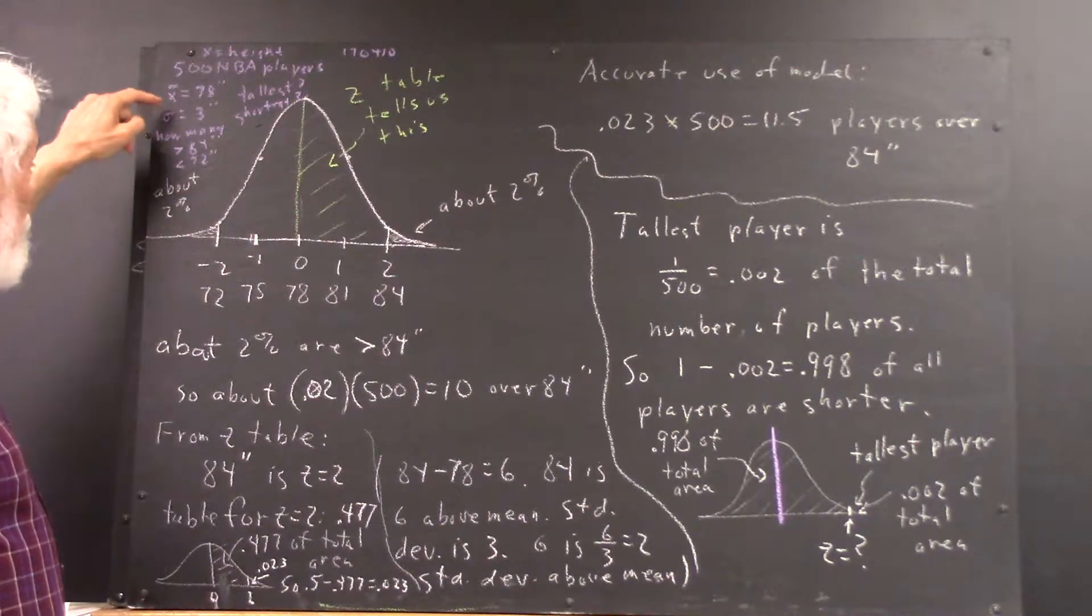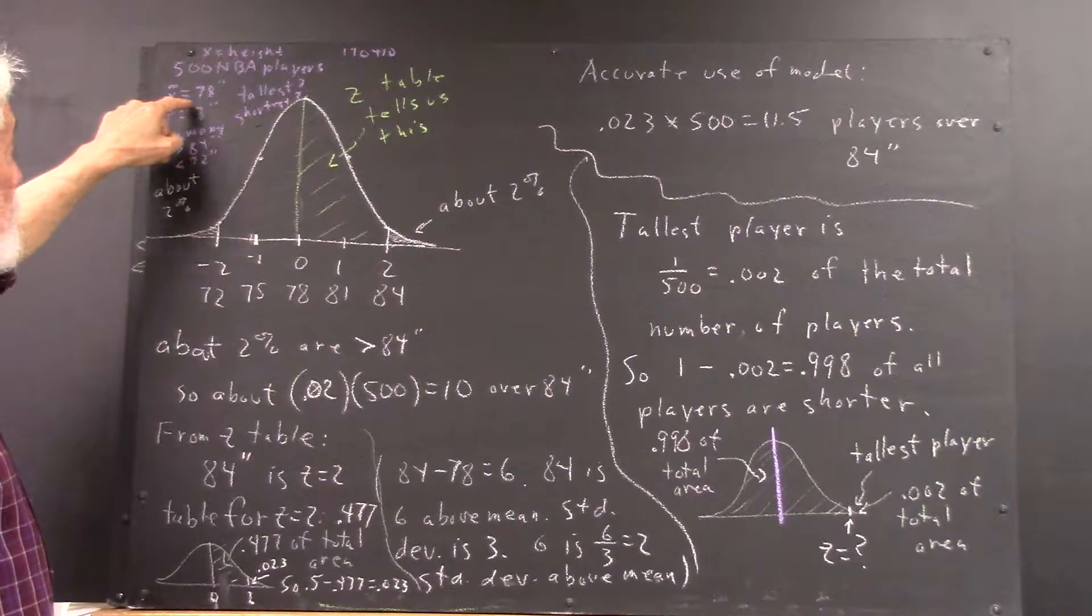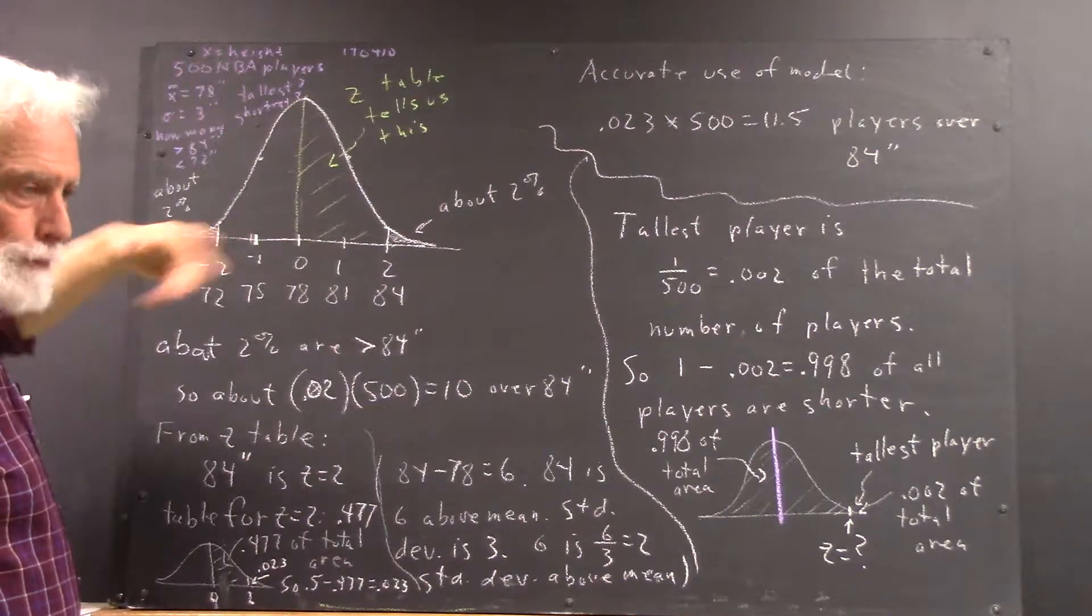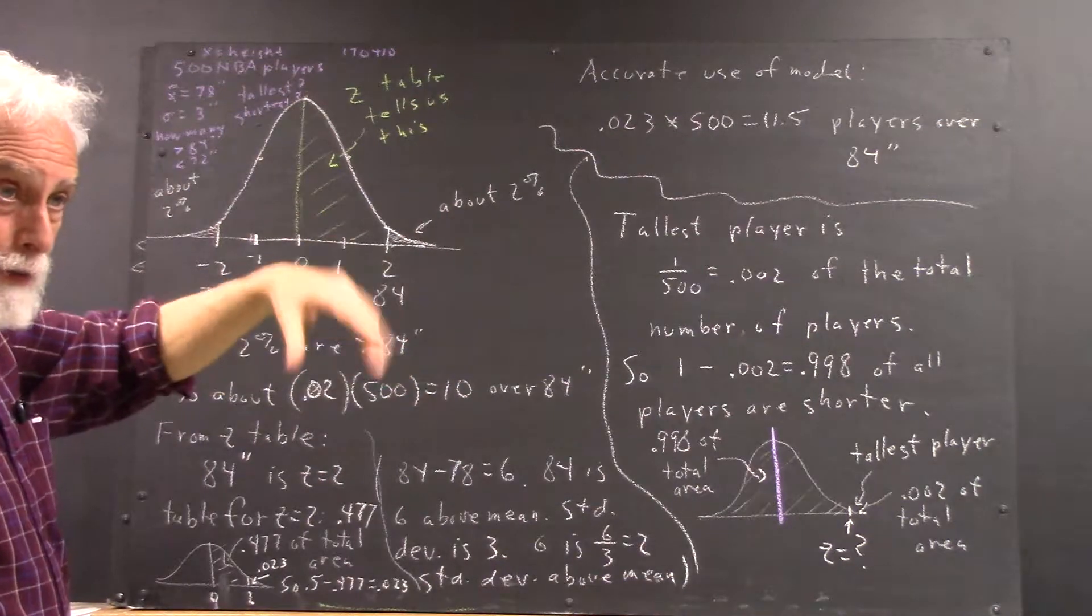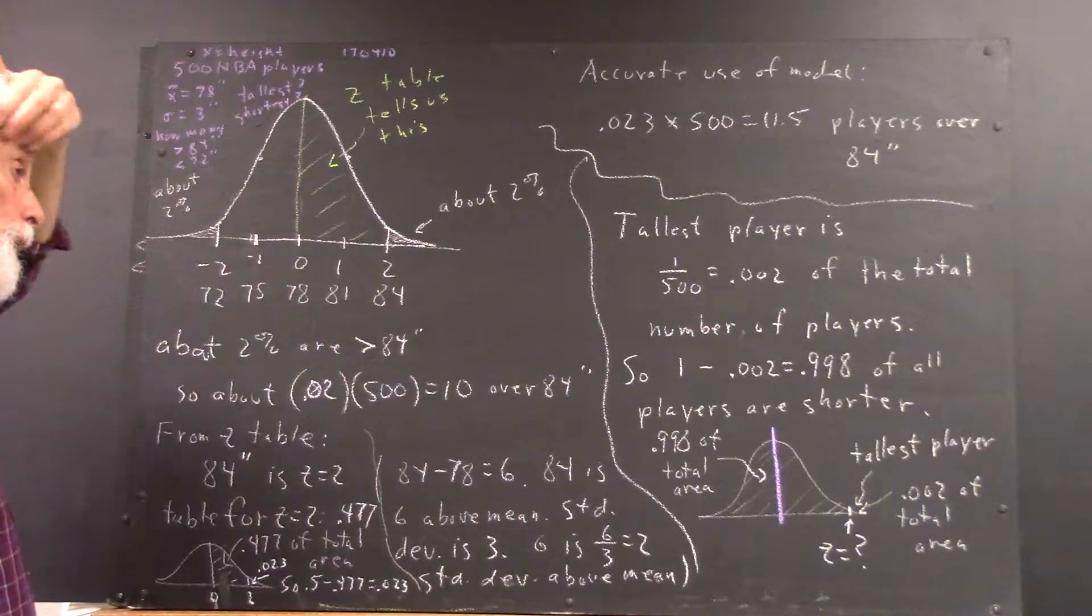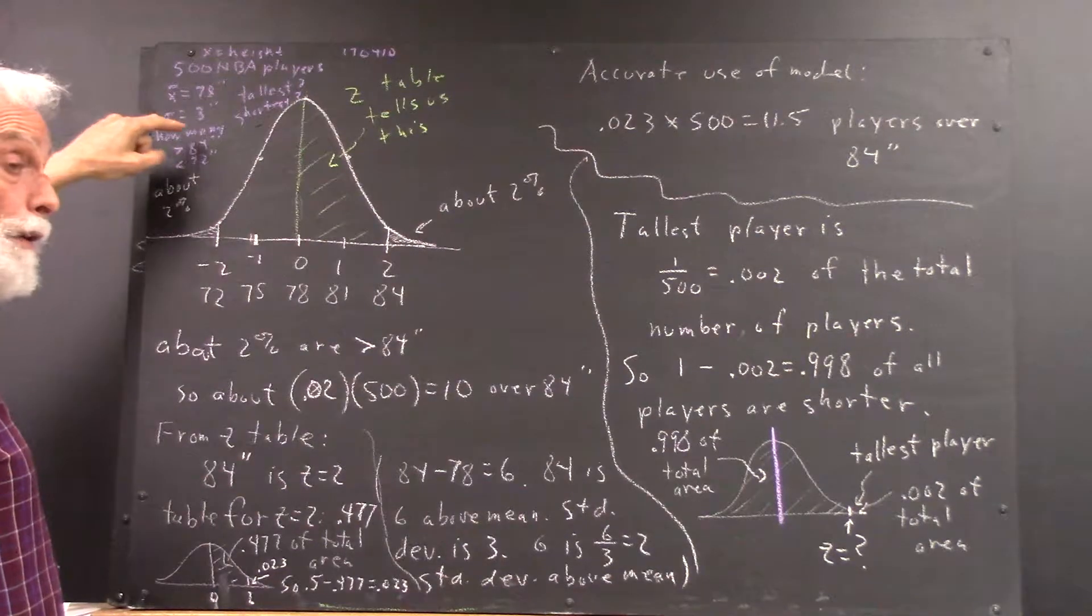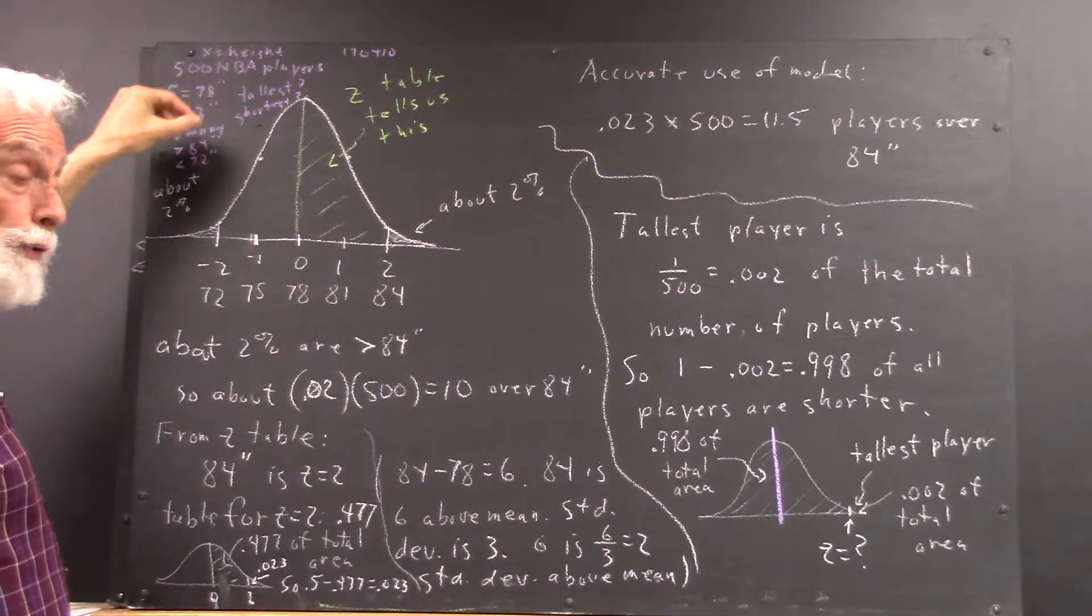We say that the mean, x-bar equals 78 inches. The problem states the mean height is 78 inches, so x-bar is 78 inches. Standard deviation is given as 3 inches.